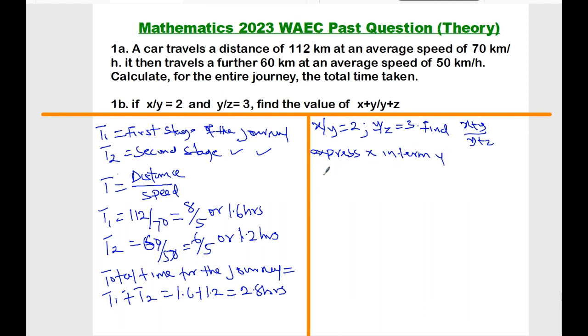x over y equals 2, then x will be 2y. So we can replace the value of x in the expression above, and that will be replacing x by 2y. That would be 2y plus y divided by y plus z, and that will give us 3y all over y plus z.